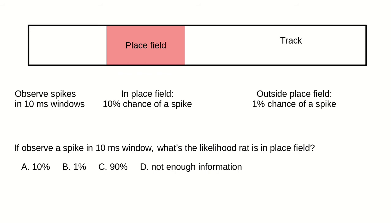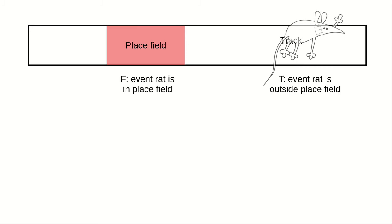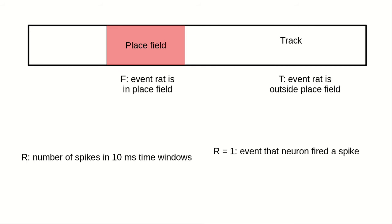Its answer might not be readily obvious from intuition alone. We can get more insight by formulating this question mathematically. The first step is to define the events of the experiment so we can mathematically represent their probabilities. Let F be the event that the rat is in the neuron's place field. Let T be the event that the rat is anywhere else on the track outside the neuron's place field. We'll denote the events involving a spike in a different manner. Let R be the number of spikes that the neuron fired in the 10 millisecond window. Since we assume the neuron fired at most once in the window, there are only two possibilities for the value of R, which correspond to two events: the event R equals 1 that the neuron fired a spike, and the event R equals 0 that the neuron did not fire a spike in the window.